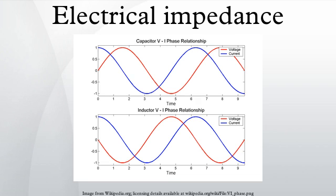In order to simplify calculations, sinusoidal voltage and current waves are commonly represented as complex-valued functions of time. Impedance is defined as the ratio of these quantities. Substituting these into Ohm's law, and noting that this must hold for all t, we may equate the magnitudes and phases. The magnitude equation is the familiar Ohm's law applied to the voltage and current amplitudes, while the second equation defines the phase relationship.